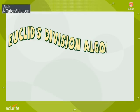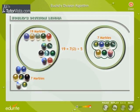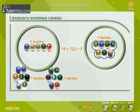Euclid's Division Algorithm. If 19 marbles are counted in 7s, 5 will remain.